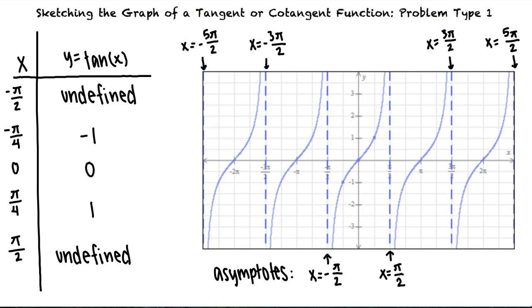We also see that tangent x has a period of pi because it completes one cycle between the asymptotes at x equals negative pi halves and x equals pi halves.